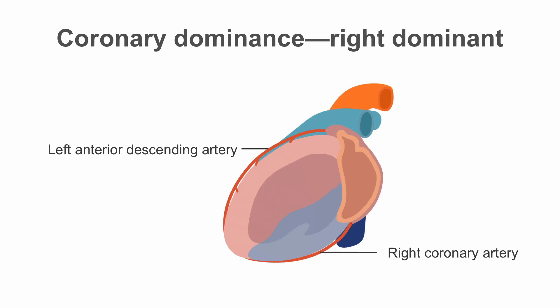Here we can see that the patient has right coronary dominance. The PDA that supplies the inferior aspect of the heart is supplied by the right coronary artery. It is worthwhile noting that up to 85% of hearts are right-sided dominant, and in these cases the left circumflex artery is usually smaller.